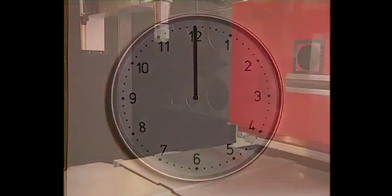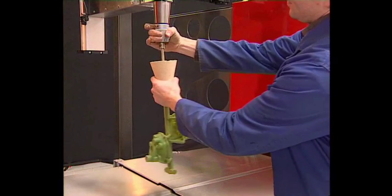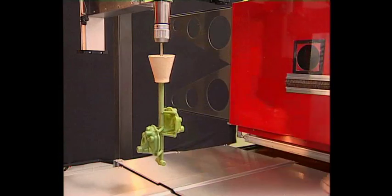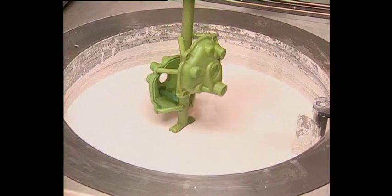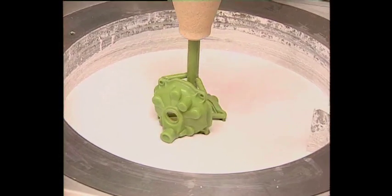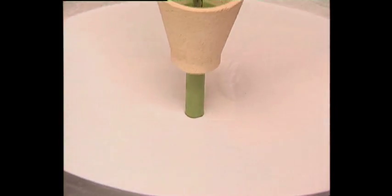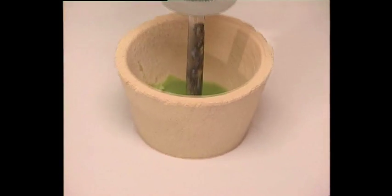The following summary will show how fast the process, starting from the wax model through to the finished cast, can be done. By means of a quick release link, the model tree is fixed and the dipping of the first layer begins.